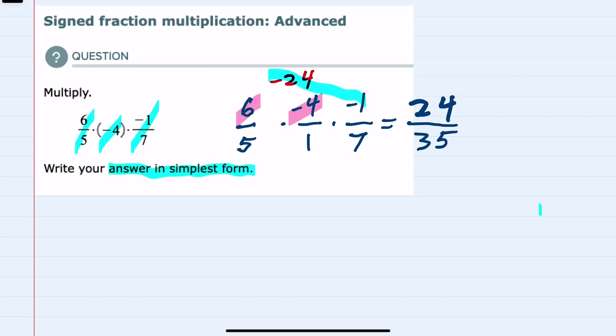And to check to see that I have this answer in simplest form, I could try to reduce the fraction, however 24 and 35 do not have a common factor that I can divide out and cancel, so our fraction is in simplest form. That's one or two. Thank you.